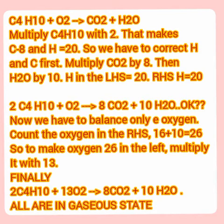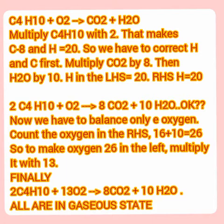Now you have to balance the carbon. Left-hand side: 2 into 4 is 8 carbon. So you have to put 8 CO2 on the right-hand side. Now hydrogen and carbon are both balanced. As I told you, leave oxygen alone until the last moment. Now count the oxygen on the right-hand side: 16 plus 10 is 26. If you want to get 26 on the left-hand side for oxygen, a simple arithmetic — just multiply O2 by 13. So the final equation is 2C4H10 plus 13O2 gives 8CO2 plus 10H2O.